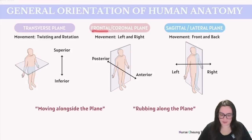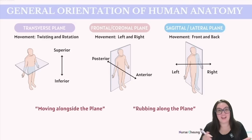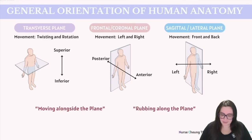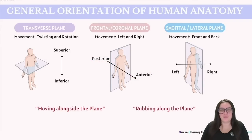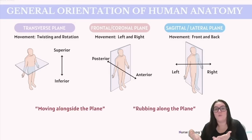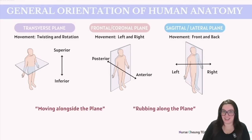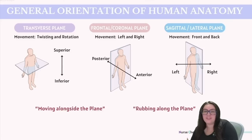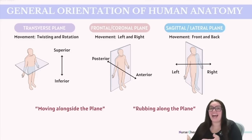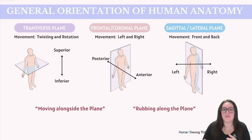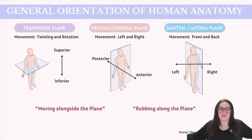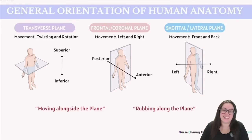Next up, we have the frontal plane, also known as the coronal plane — they are used interchangeably on the ATITs. What this plane does is it separates our body from our posterior, which is our back, and our anterior, which is the front. Movements in the frontal plane involve motions like side to side, away from, and towards the midline. We have abduction, which means we're moving away from the midline, and adduction, which means we're moving back towards the midline. You can also raise your arms or legs out to your side, exemplifying movements within this frontal plane.